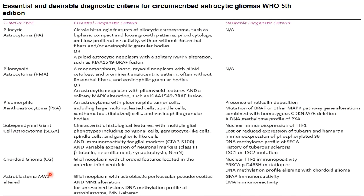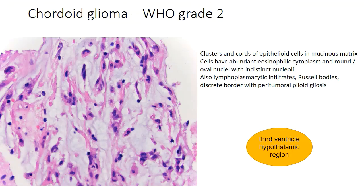Cordoid glioma is a glial neoplasm typically occurring in the anterior third ventricle, presenting with cordoid features. Desirable criteria include TTF-1 immunopositivity, mutation in PRKCA, and DNA methylation profiling aligning with cordoid glioma. This is a CNS-WHO grade 2 glioma where cells are typically present in cords with characteristic round-to-ovoid to epithelioid morphology and a mucomyxoid background. There may be characteristic lymphoplasmacytic infiltrate and Rustle bodies in the peritumoral pyloid region.